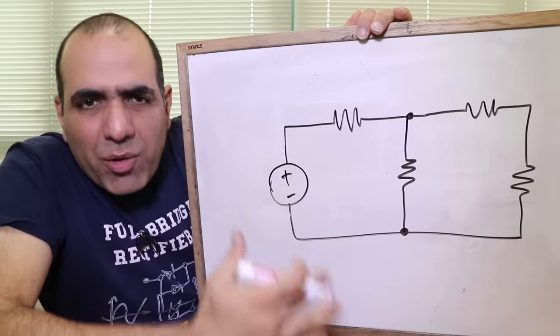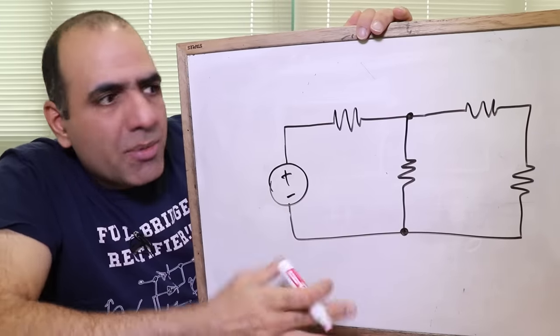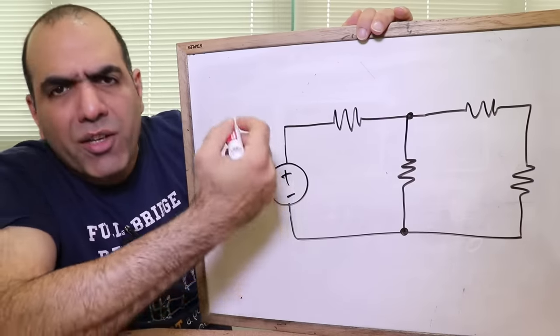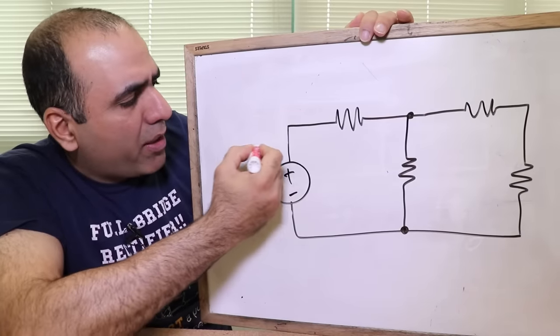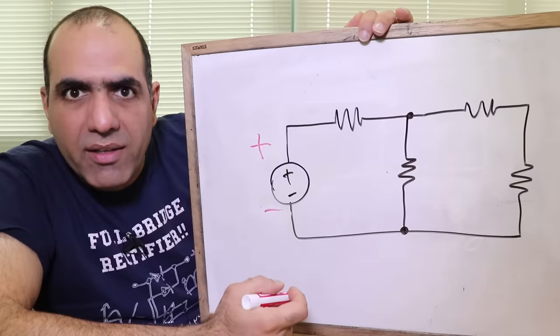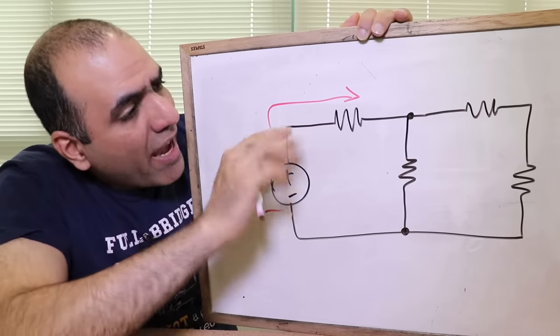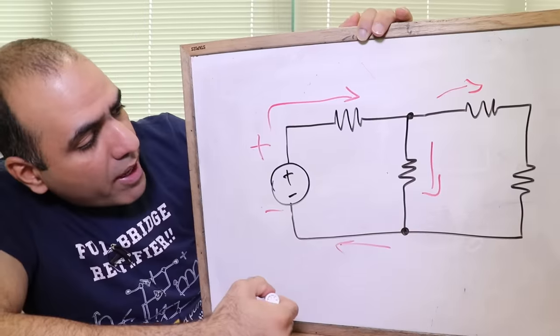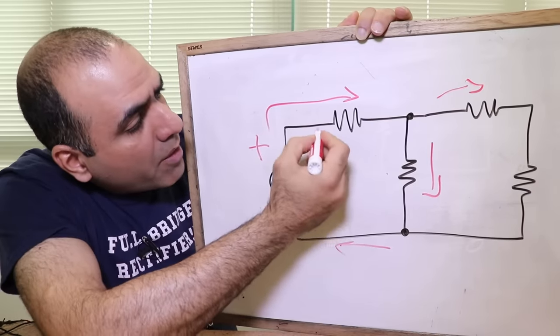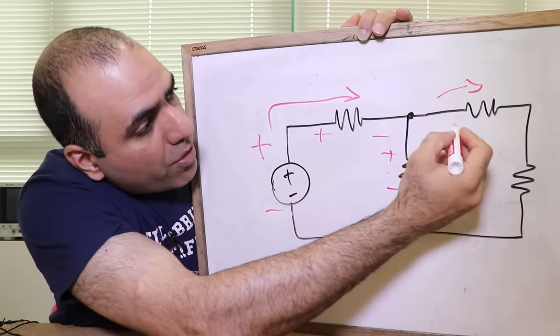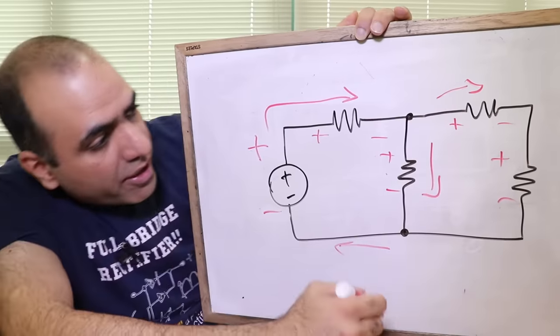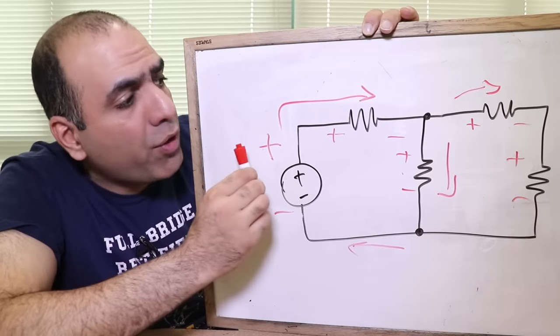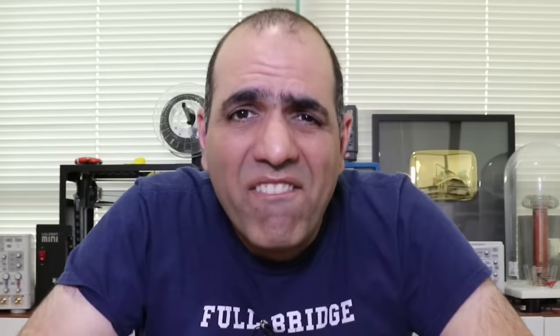Yeah, you can assign polarities and directions randomly. But it helps understand the circuit better if you assign them properly. For example, start with your power supply. If you already know the polarity, put it on. Otherwise, for example, if it is AC, put positive on the top side. Then the direction of the current goes out of the positive of the power supply and distributes through the load and splits in branches and returns to the supply. And on the load side, the current enters the positive terminal of the load. So you can easily put polarities there. This kind of assignment keeps your values positive for DC, not so much for AC. But using it will give you a better understanding of the flow of your circuit. Very simple!